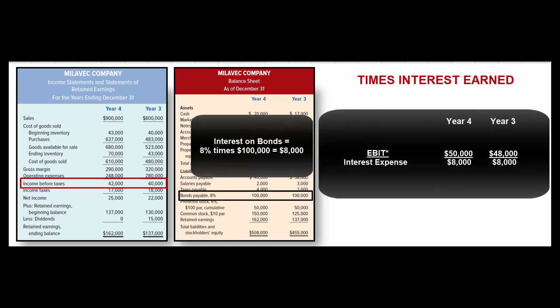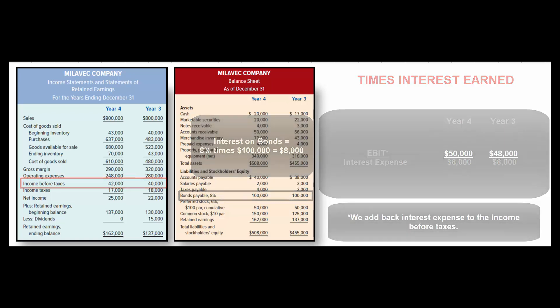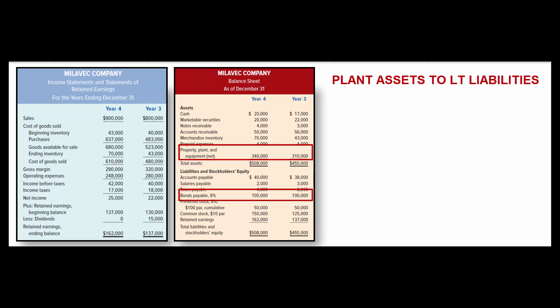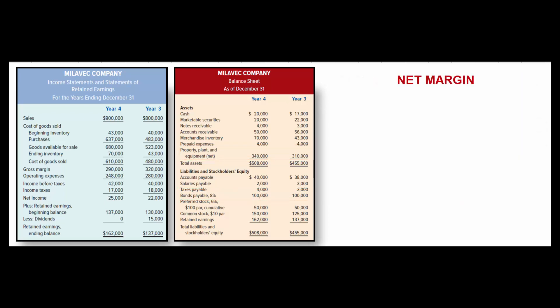We might also measure whether a company can afford its debt by looking at times interest earned: EBIT (earnings before interest and taxes) divided by interest expense. For year four that's 6.25 times; for year three it's 6.0 times. Companies also often pledge long-term assets as security for debt, so we look at plant assets to long-term liabilities — net plant assets over long-term liabilities: 3.4 to 1 for year four and 3.1 to 1 for year three.